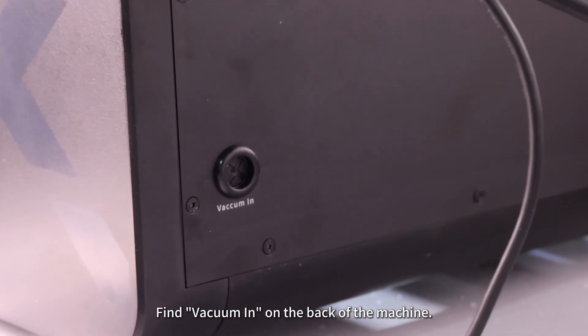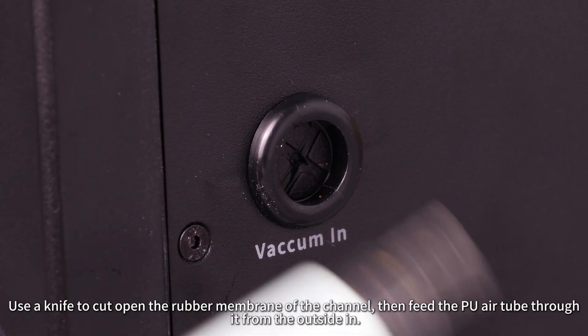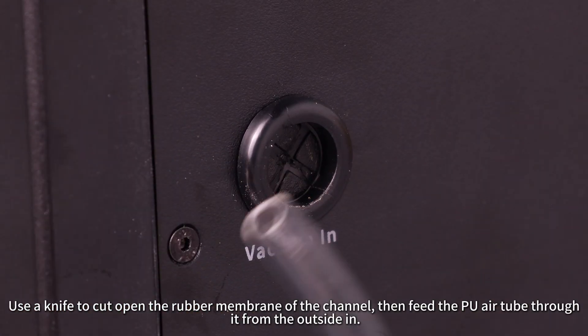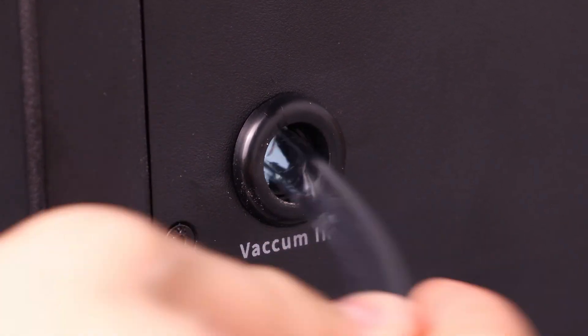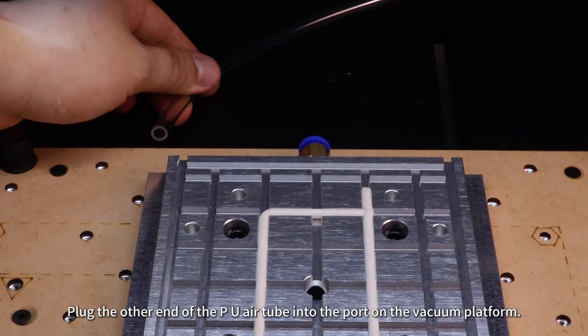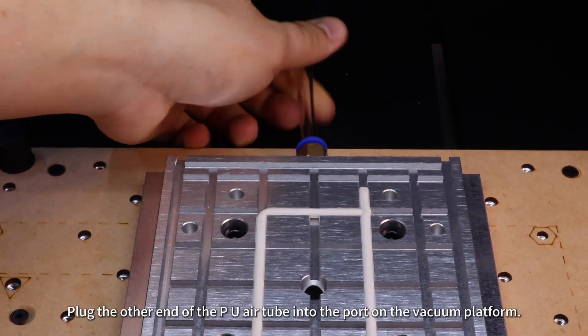Find vacuum in on the back of the machine. Use a knife to cut open the rubber membrane of the channel. Then feed the PU air tube through it from the outside in. Plug the other end of the PU air tube into the port on the vacuum platform.